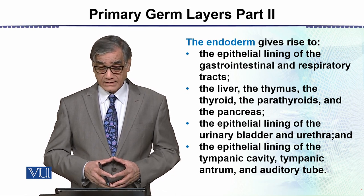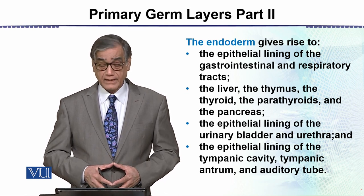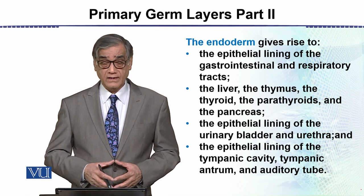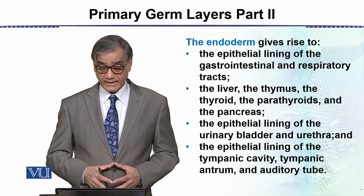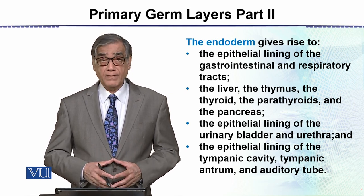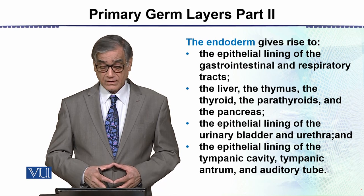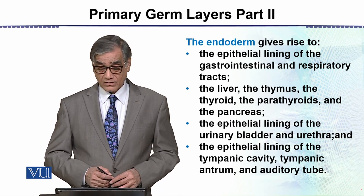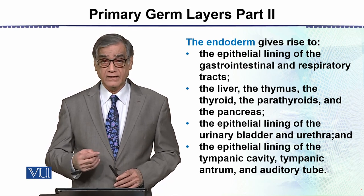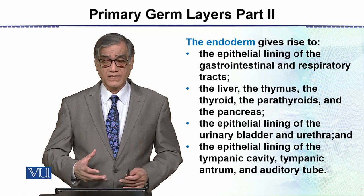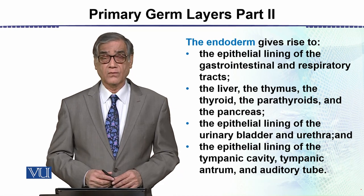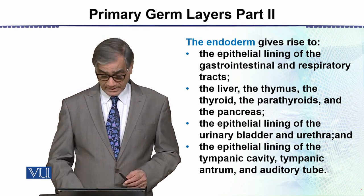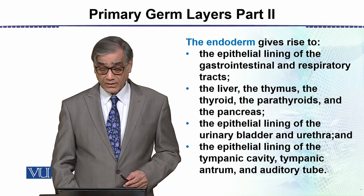Also endodermal in origin is the epithelial lining of the tympanic cavity — that is the ear — which includes the tympanic antrum, the cavity, and the auditory tube. These ear structures are almost entirely derived from the endoderm.